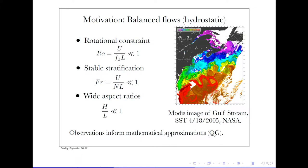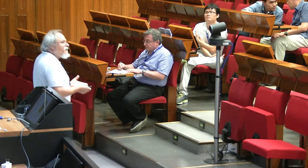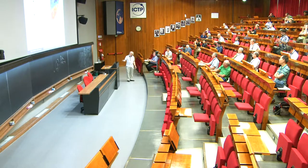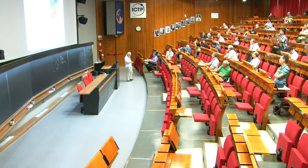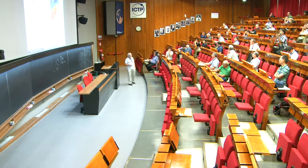The important thing for quasi-geostrophy is that you make the assumption that the height of the layer divided by L is small compared to one. That's good for the oceans — a typical depth of the ocean is around four kilometers, while these meanders may be 100 kilometers across. So H over L indeed is small, and that's the basic input that goes into the quasi-geostrophic approximation.